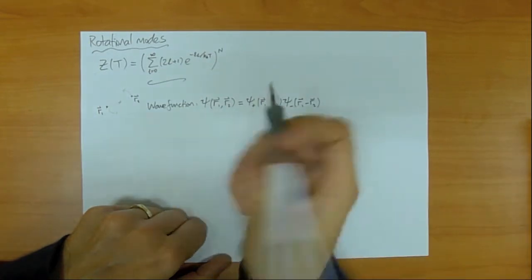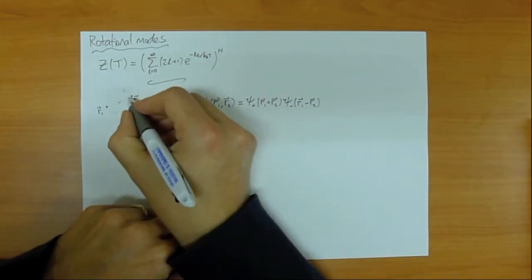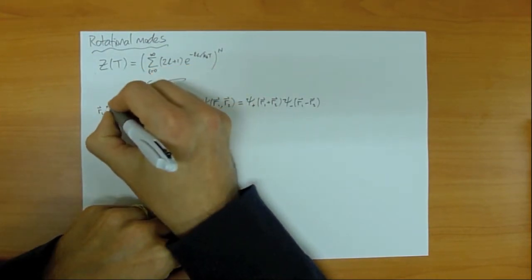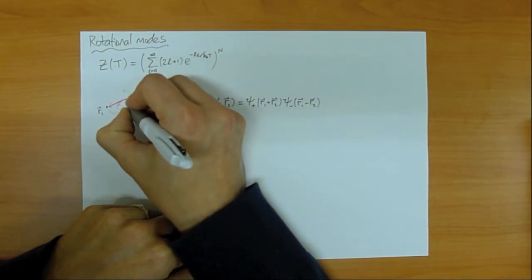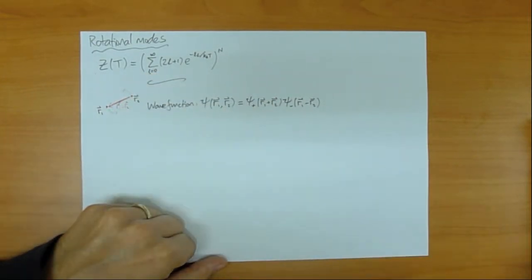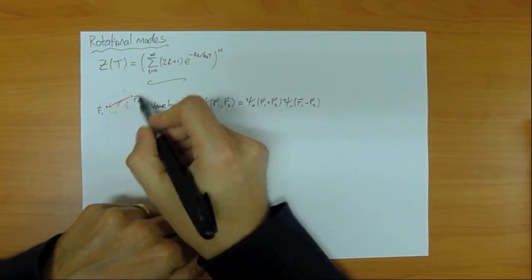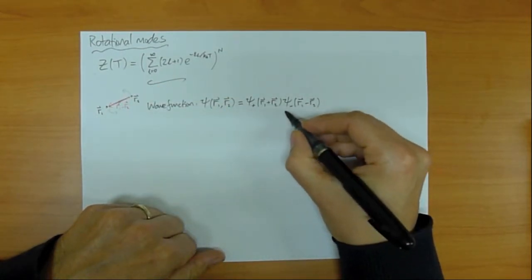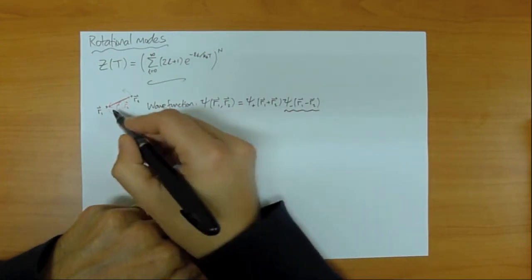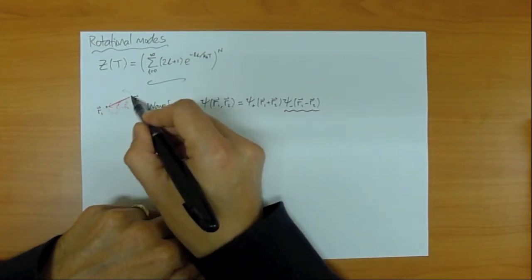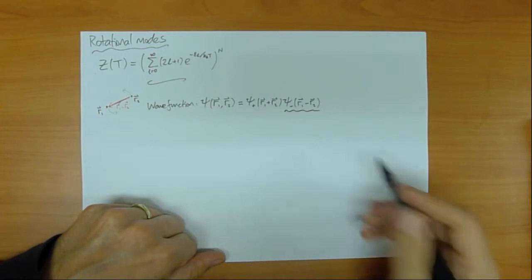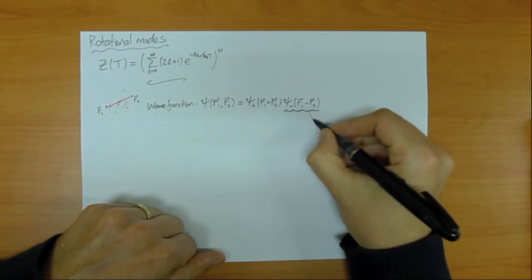In this picture R1−R2 is the vector from R2 to R1. Therefore we expect that the rotational information is contained in psi_minus, because this is the one which takes note of the spatial displacement between the two nuclei, whereas psi_plus tracks their common centre of mass. So the rotational information is in psi_minus.